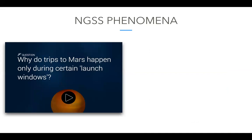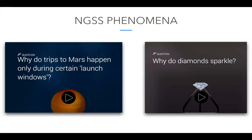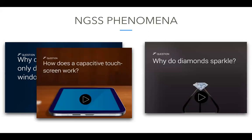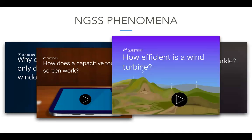Our simulations serve as great resources for any NGSS curriculum. Here are some examples of Sims with awesome big questions: Journey to Mars — why do trips to Mars happen during certain launch windows? The Diamond Cut — why do diamonds sparkle? The Touch Screen Sim — how does a capacitive touch screen work? And the Wind Turbine Sim — how efficient is a wind turbine? The challenge of NGSS is how to present the right phenomenon to elicit the right questions from students to meet those standards — all done with the goal of sparking curiosity and allowing students to discover on their own. I really think these Sims can help you meet this challenge and can easily serve as phenomenon in your NGSS course.